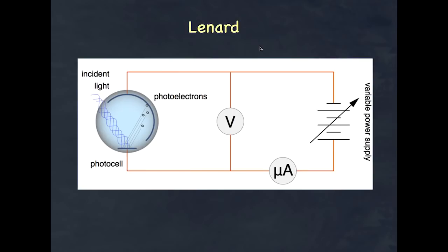A short time later, Philip Lenard did another experiment. He set up a photocell and fired light on it. The light liberated charged particles — electrons. He was able to set up a situation measuring the voltage, apply a voltage to it, and also measure the current. The current is a measurement of how much charge is flowing at any one time, and the voltage allowed him to work out the actual energy of those charges. It was an experiment to explore the relationship between the light shining onto the photocell and the resulting current.